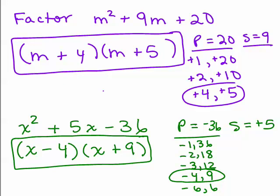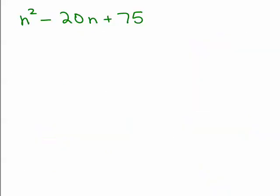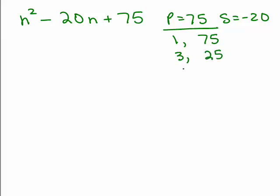All right, so let's try another one. Okay, so try this one. Put it on pause. Try it and then come back. Okay, the product is going to be 75. The sum is going to be negative 20. So make sure you really list all the numbers that multiply out to be 75. One goes into it. Two goes into it. Three. Four does not. Five does.